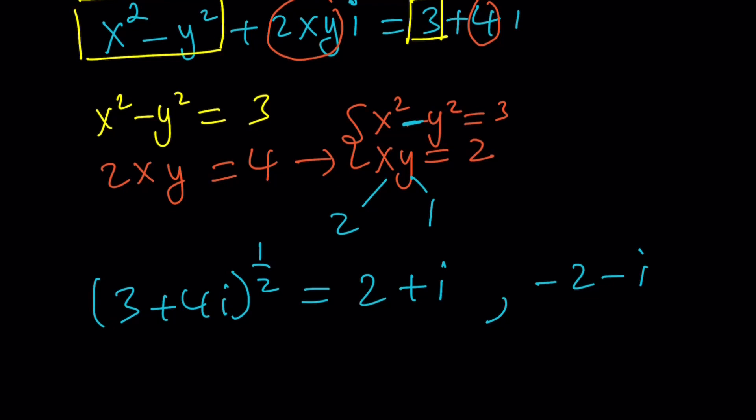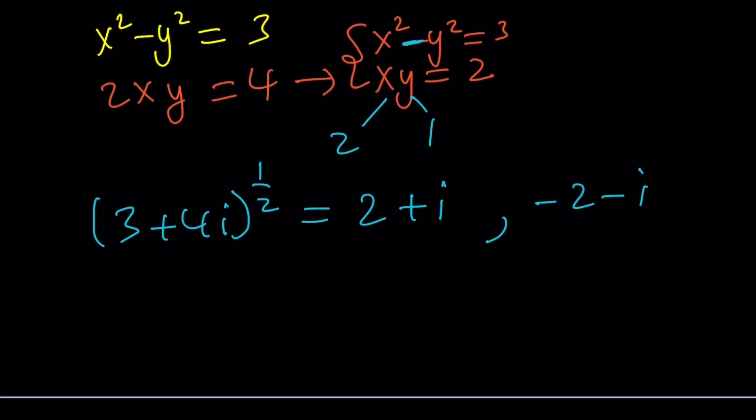And when you graph them on the coordinate system or complex plane, you should see that they are separated by pi radians or 180 degrees. So this is the first method. Let's go ahead and talk about the second method.